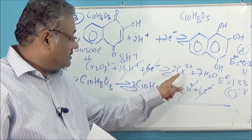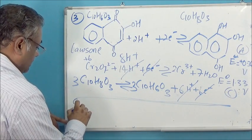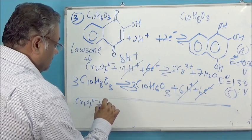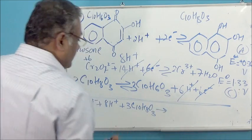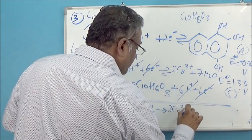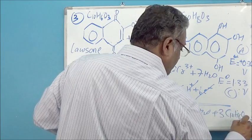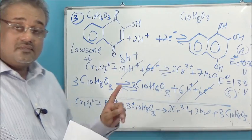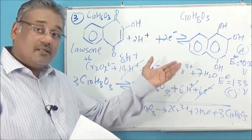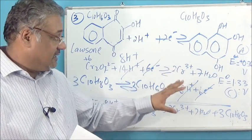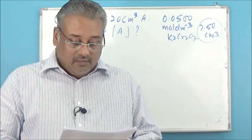The final answer is: Cr2O7²⁻ + 8H⁺ + 3C10H8O3 → 2Cr³⁺ + 7H2O + 3C10H6O3. Don't forget the two important skills: identify anode and cathode, flip the anode equation, then multiply by the appropriate number to balance electrons. Sometimes you may have to multiply both equations. Cancel the electrons, cancel anything else possible, and whatever's left is the final equation.